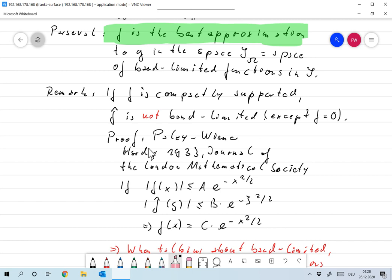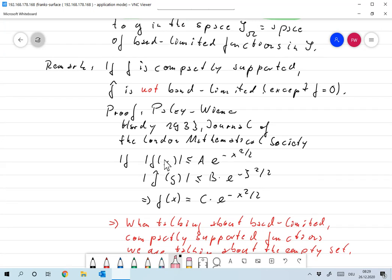And the proof follows from the theorem by Paley-Wiener, and I've linked to an article by Hardy that was already published in 1933—so that's quite a long time ago—in the Journal of the London Mathematical Society. It's something about remarks on the Fourier transform. And it basically says that if f is a function that is bounded by a constant times e^(-x²/2) and f̂ is bounded by a constant times e^(-x²/2)...